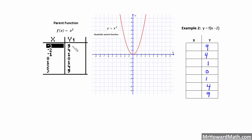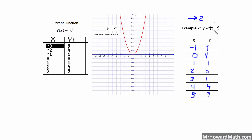There are the y coordinates. So my y coordinate of 9 was paired with negative 3, so I need to go right 2. Everything moves right 2: instead of negative 3, it's now going to be negative 1. Instead of negative 2, it's now going to be 0. Negative 1 moves right 2 to become 1. 0 moves right 2 to become 2. 1 moves right 2 to become 3. 2 moves right 2 to become 4. And 3 moves right 2 to become 5. So let's get those points plotted and get it graphed.